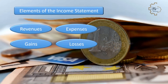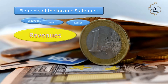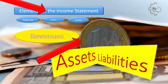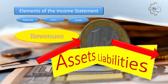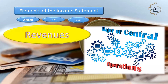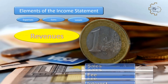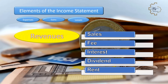The elements of the income statement are: revenues, expenses, gains, and losses. Revenues are inflows or other enhancements of assets, or settlements of liabilities, that constitute the entity's ongoing major or central operations. Examples of revenue accounts include sales, fees, interest, dividends, and rent.